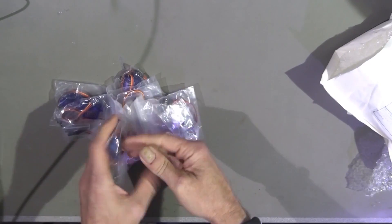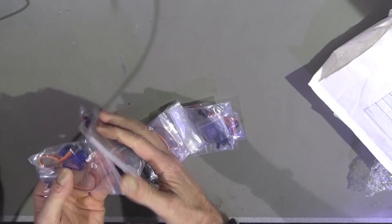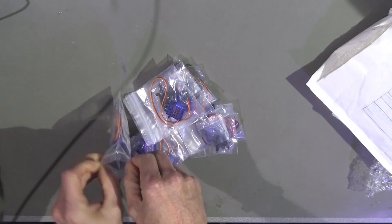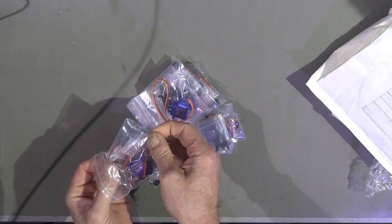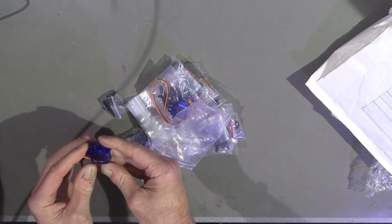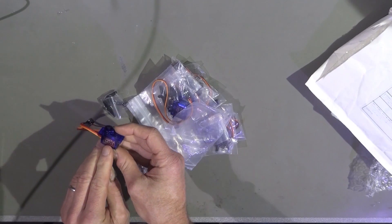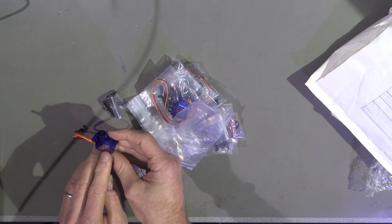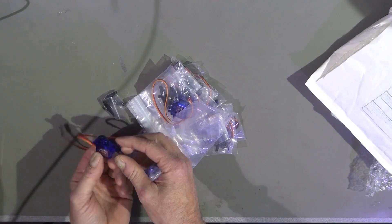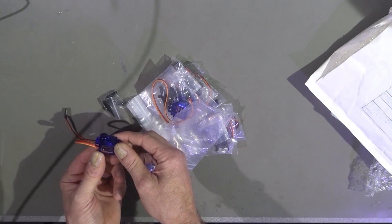These are servos, mini servos, and the specialty here is that they are a little bit stronger than the original ones. These are SG92R and they have more torque, and because they are so small, torque is quite important.